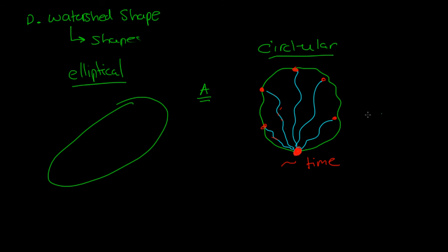There are a couple of parameters related to watershed shape that we can calculate: one is the shape factor, and one is the elongation ratio. They both tell us something important about watersheds. I will continue that in the next video.